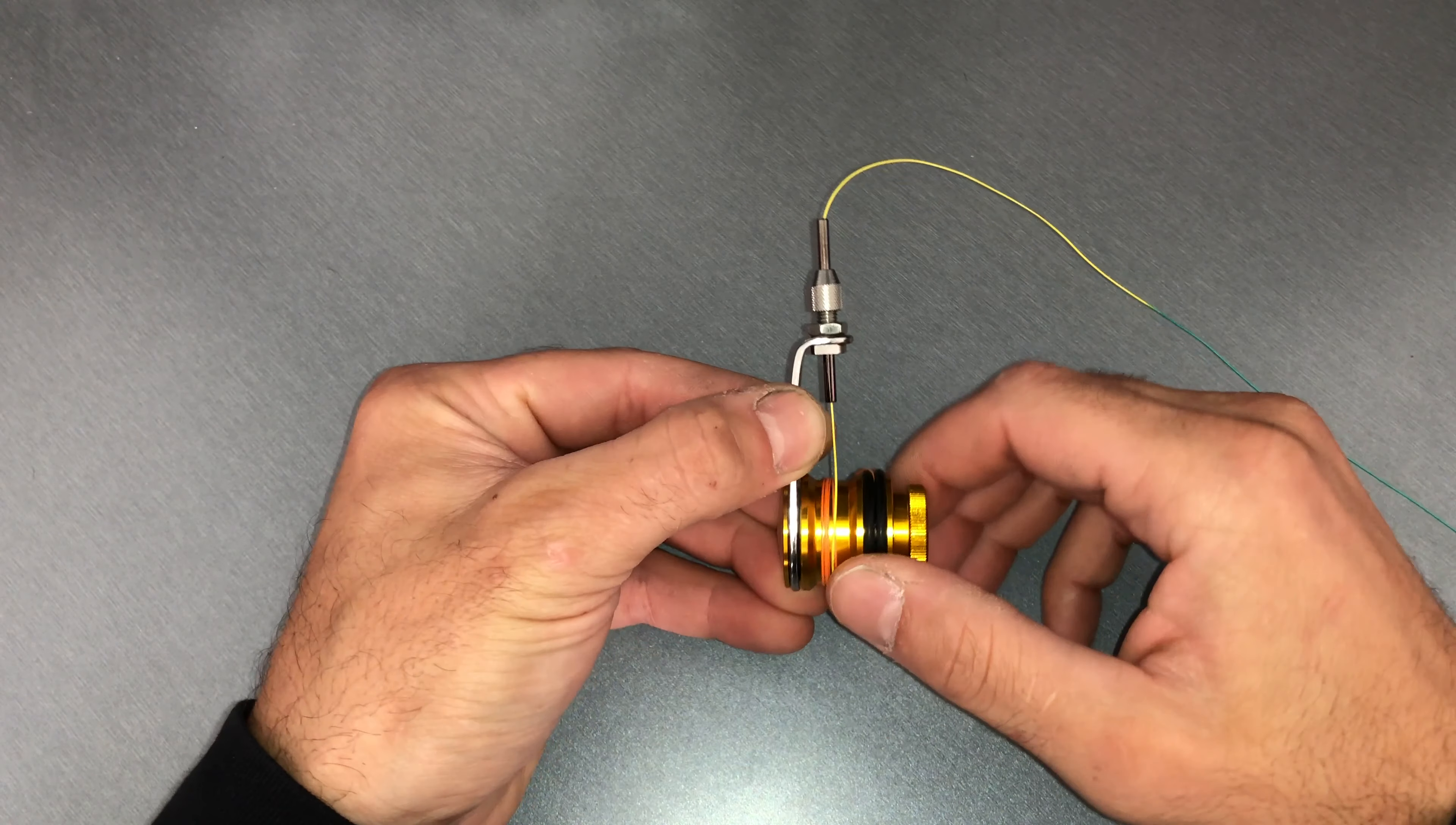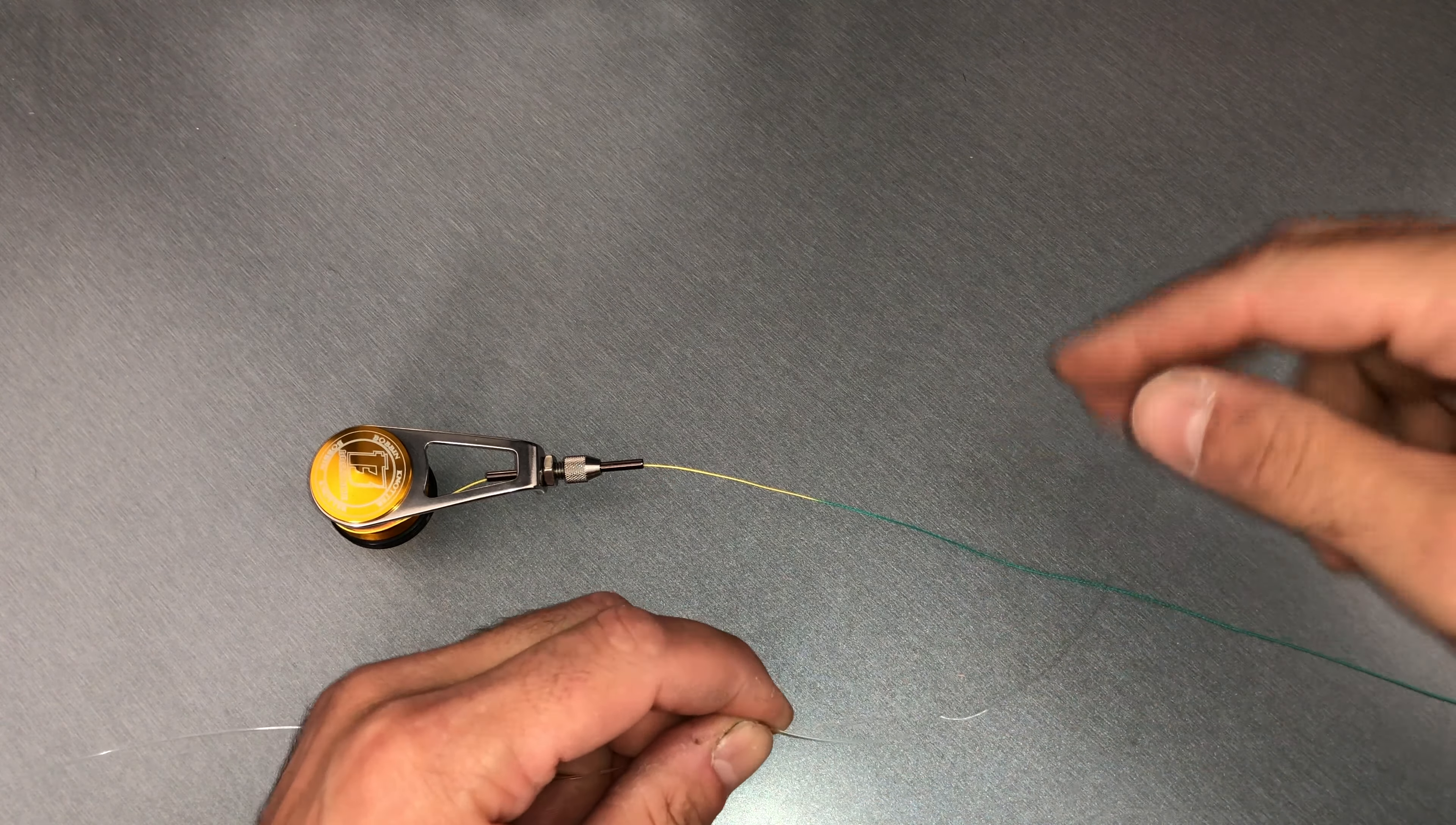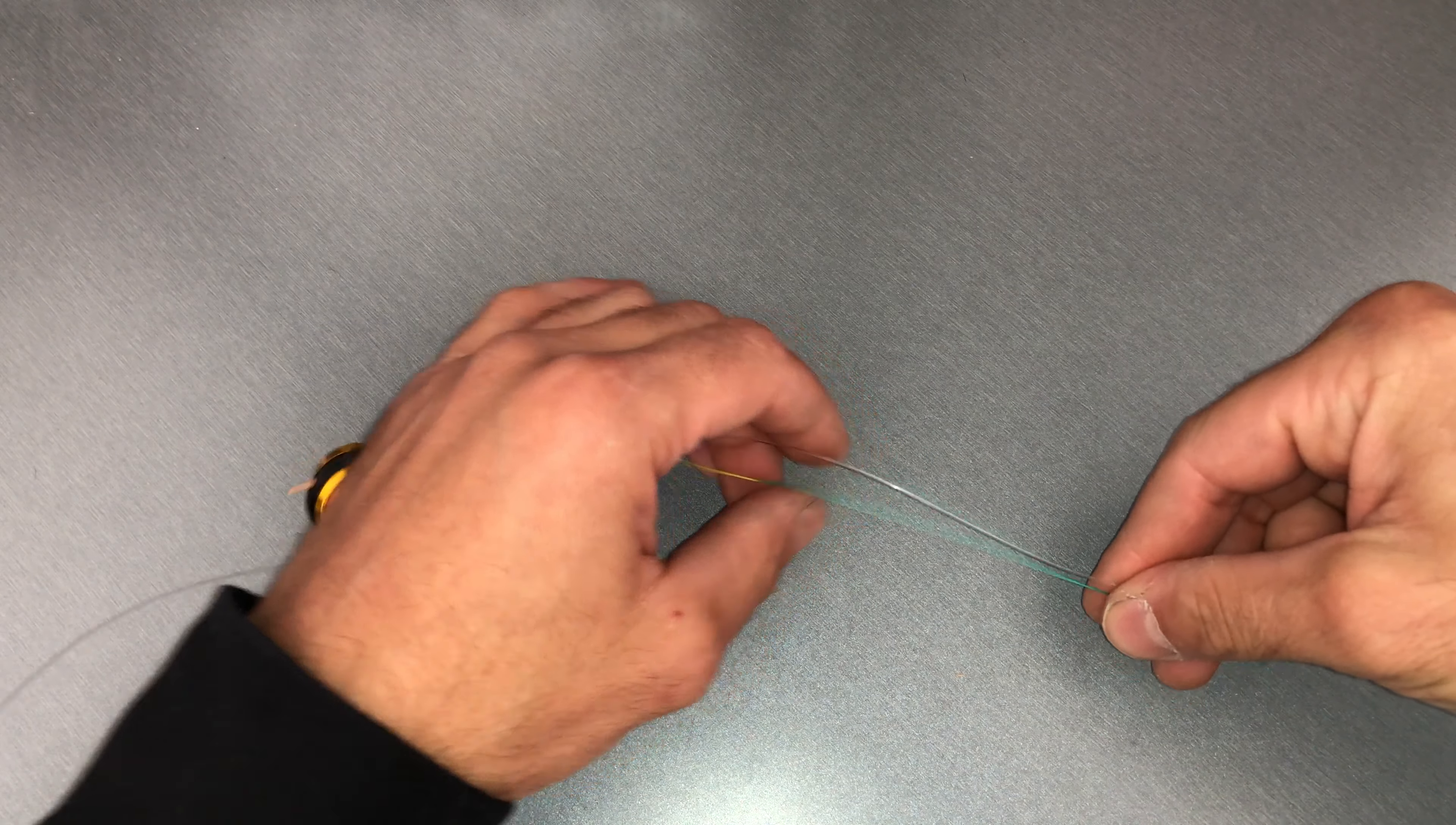So once that's ready, grab our leader material, and then from the end of the ceramic tube to where I'm going to pinch both lines on this side, we want to allow about 10 to 12 centimeters with a bit more spare in behind my fingers there. And then we're going to pinch those two lines together.